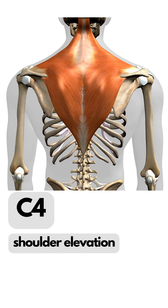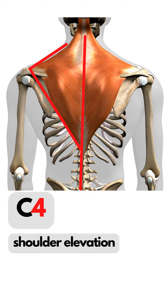C4 is shoulder elevation, of which the key muscle is the trapezius. If we trace the trapezius with the upper ends not quite meeting, we get a 4 for C4.